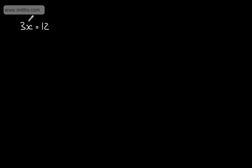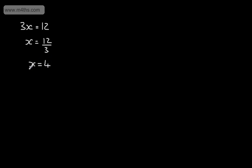What we're going to do is use the inverse operation. So if it's multiplied by 3 to give us 12, we can say that the number will be 12 divided by 3. All I'm doing is dividing both sides of the equation to get x by itself. 12 divided by 3 gives us 4, so the number we're looking for is 4. 3 times 4, quite clearly, gives us 12.